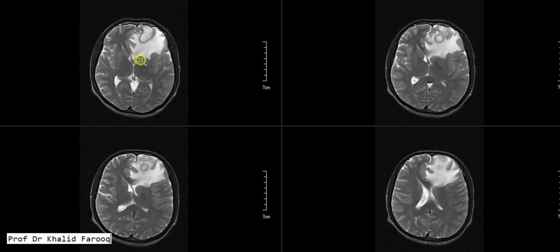Contralateral midline shift is clearly appreciated and there is mass effect on the frontal horn of the left lateral ventricle. The abnormal signals extend and involve the corpus callosum anteriorly, especially on its left side.